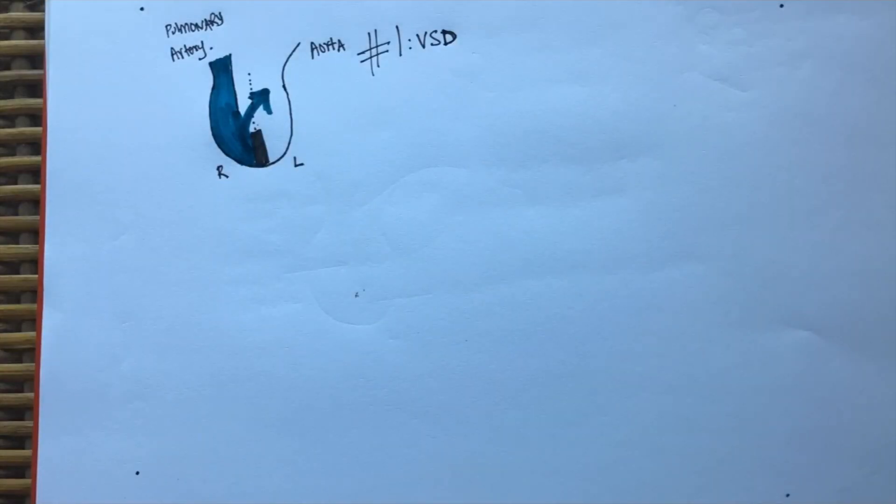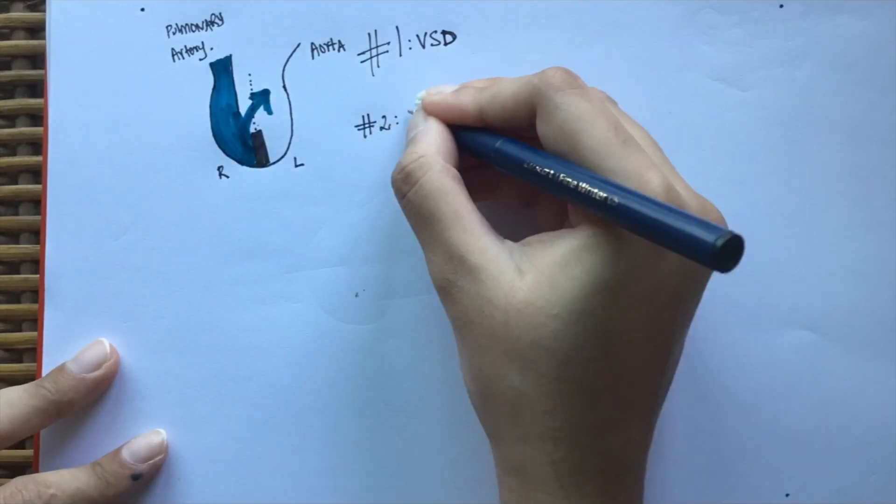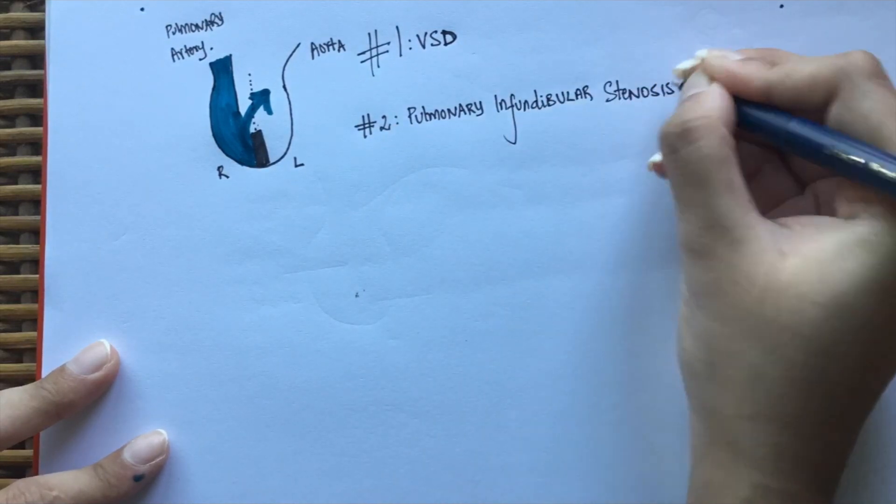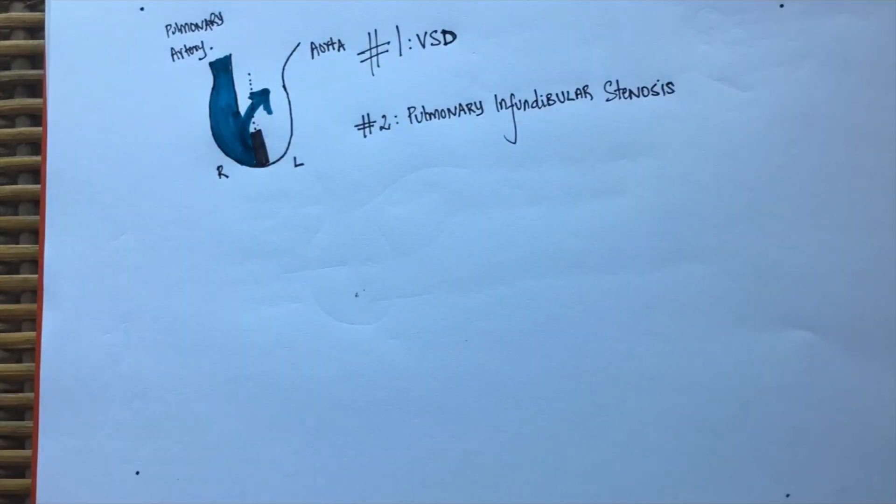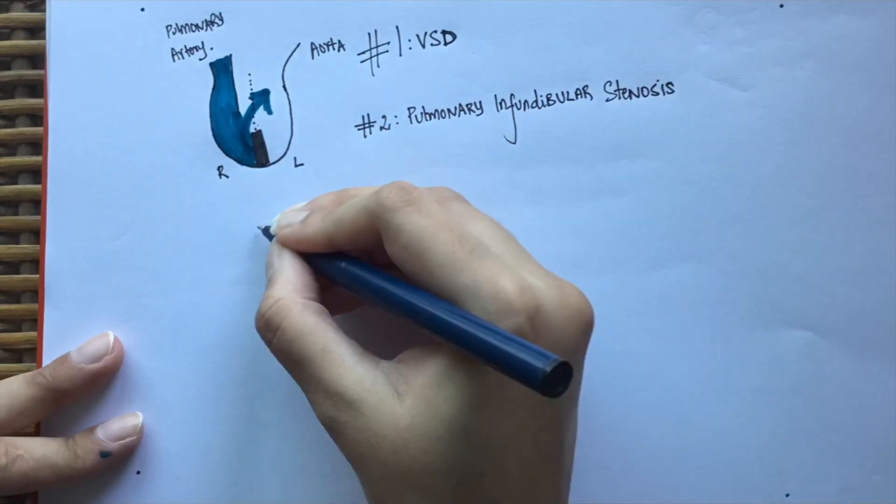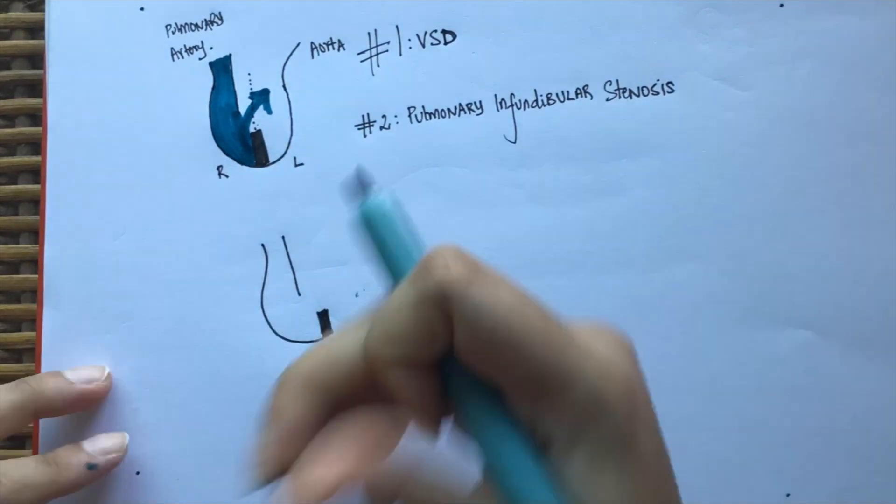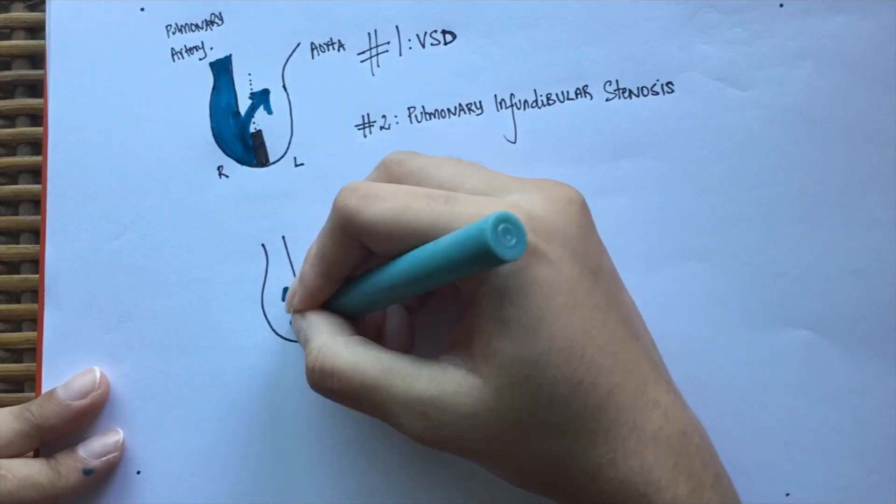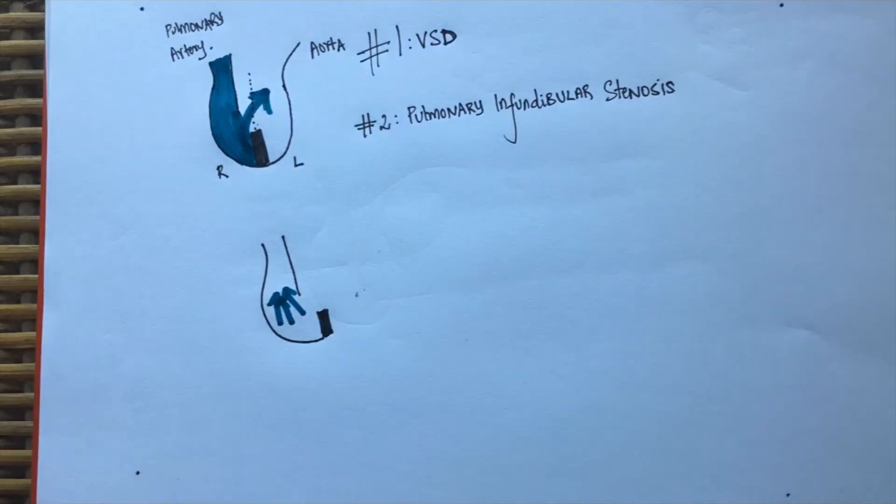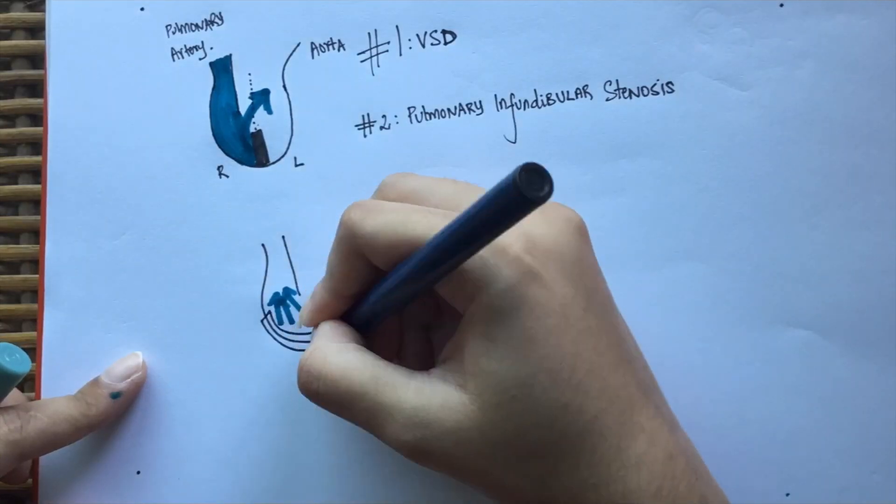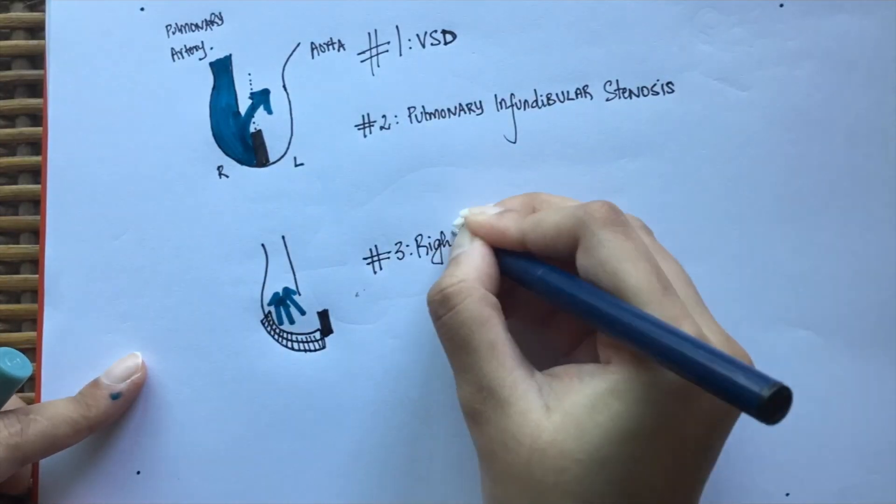Since the outflow tract is narrow, there will be pulmonary infundibular stenosis. As you can see, since the right side of the heart will be working really hard to pump blood out of the narrow outflow tract, the right ventricle will undergo hypertrophy.